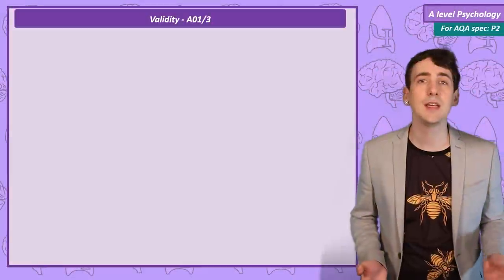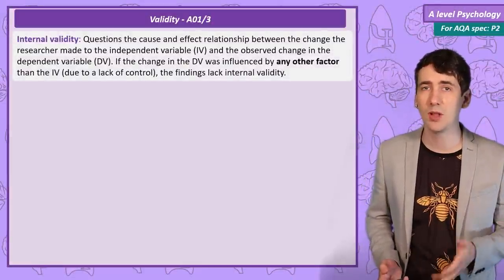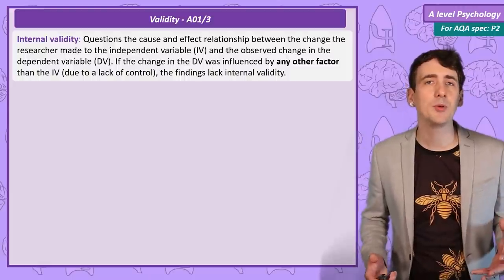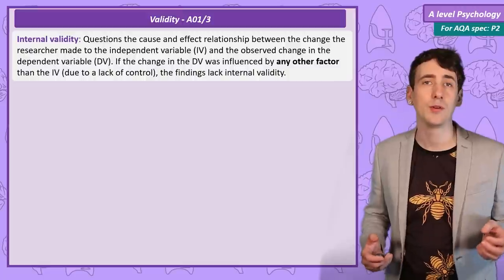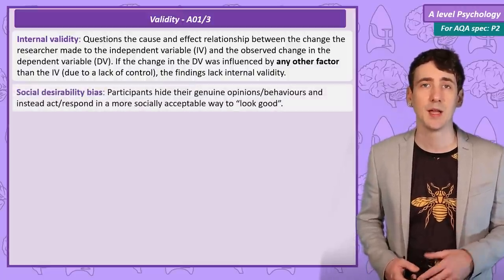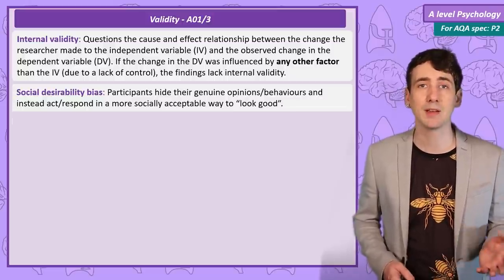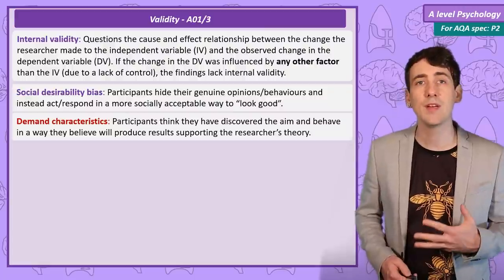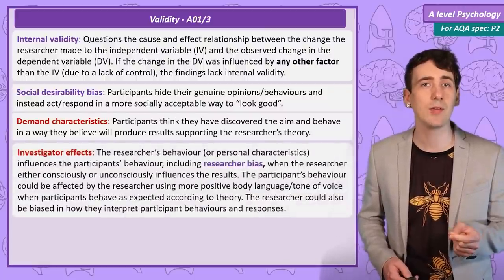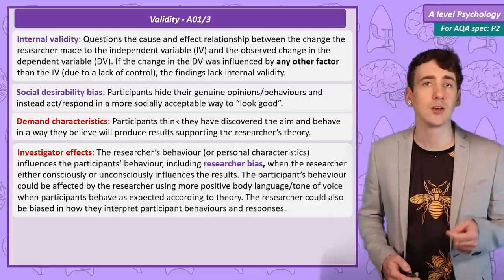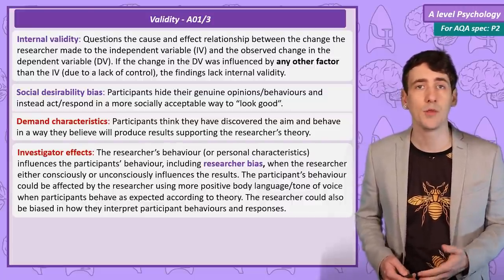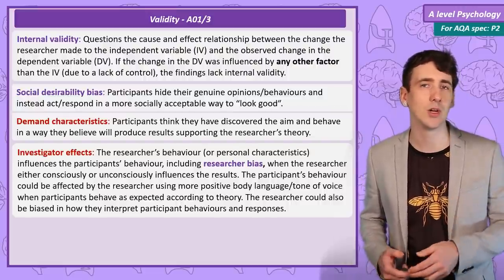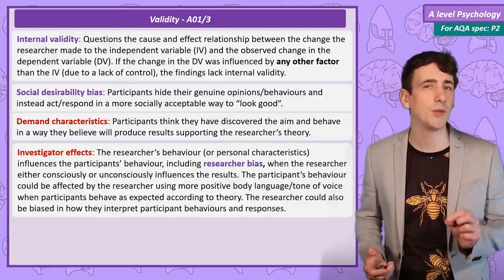Internal validity is about causality. Did the change in the independent variable actually produce the change in the dependent variable, or was it something else? Examples of when an experiment would lack internal validity are when the results are biased, such as social desirability bias — the participant wanting to be seen in a positive way — or demand characteristics, where participants want to give the researcher the results they think the researcher wants. Investigator effects occur when the characteristics or behaviour of the researcher influence the findings.